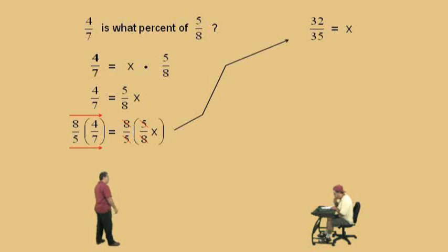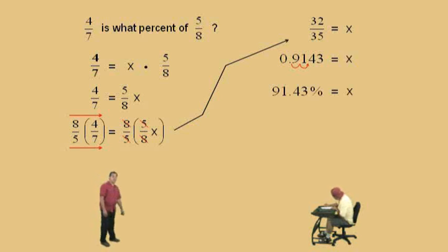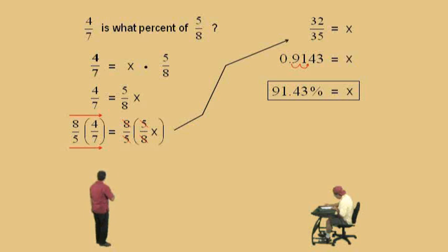Now that's not our answer because we were asked to find a percent Charlie. So we have to change that fraction to a decimal. What is 32 divided by 35 Charlie? And we'll round to the nearest ten-thousandths, four decimal places. What did you get? 0.9143. Very nice there Charlie. Now how do we change the decimal to a percent? Move right two. Very nice. So there's our answer, 91.43%. So to answer the question, 4/7 is what percent of 5/8? What's the answer Charlie? 91.43%. Very nice there Charlie.